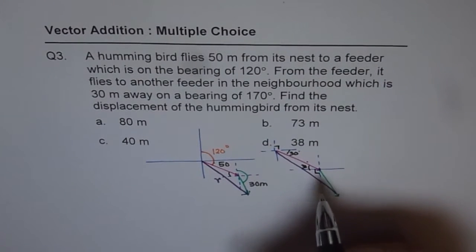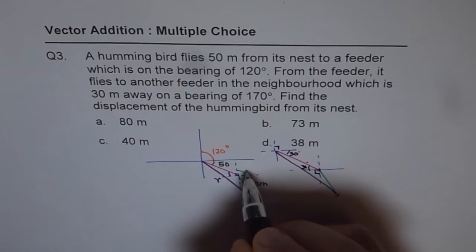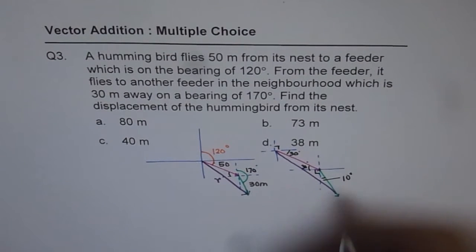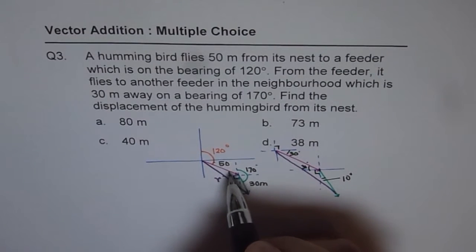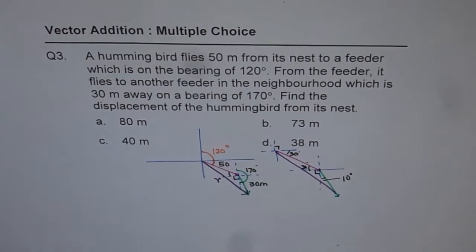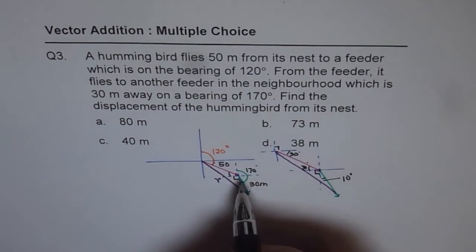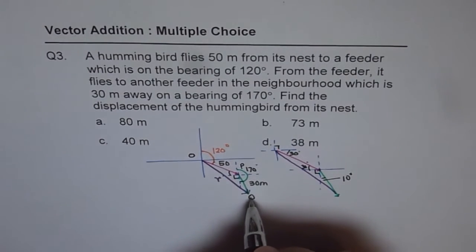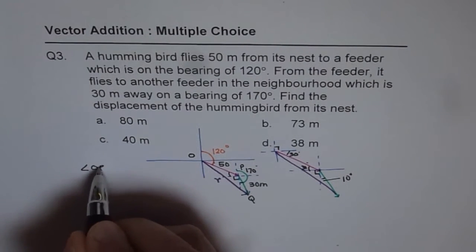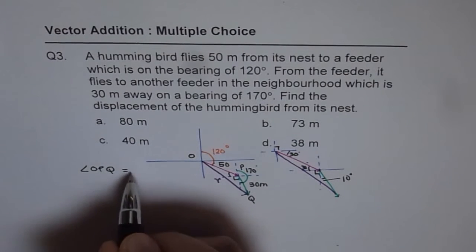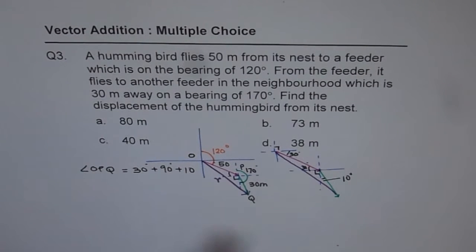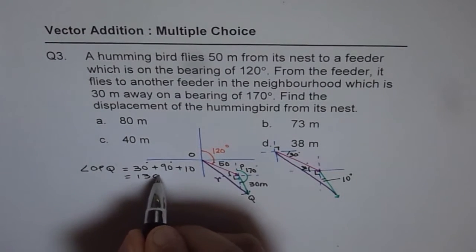This is 90. And then, since this was 170 degrees, that means 10 less. So, this is 10 degrees. So, the angle in between will be 30 plus 90 plus 10. Do you see that? Let's name OPQ. So, the angle OPQ equals 30 plus 90 plus 10. That is the angle, which is 130 degrees.